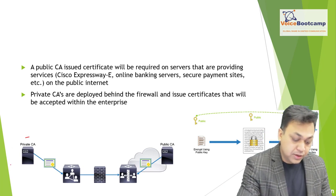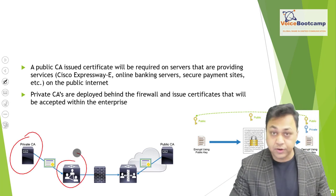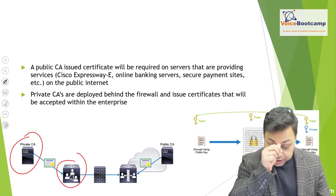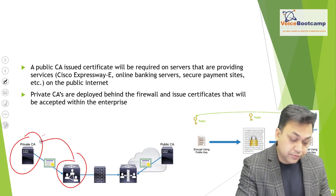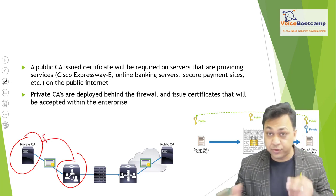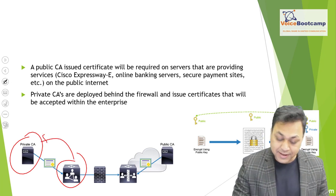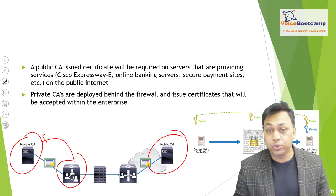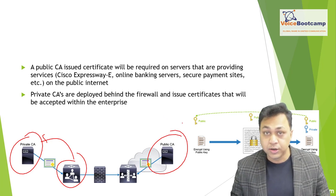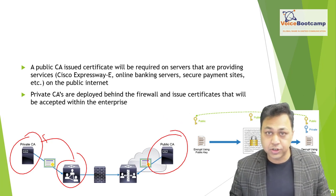A private CA can be deployed behind the firewall. If you have a private CA and a server inside your network, you can get a certificate from the private CA for internal communication. But for anything outside on the internet, you should always obtain a certificate from a public CA.